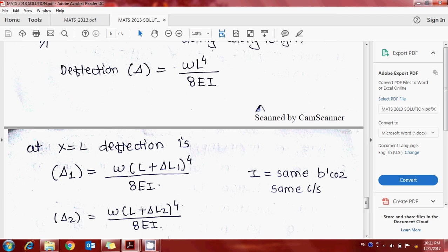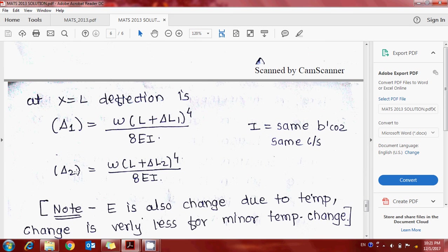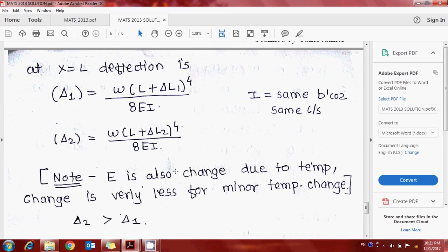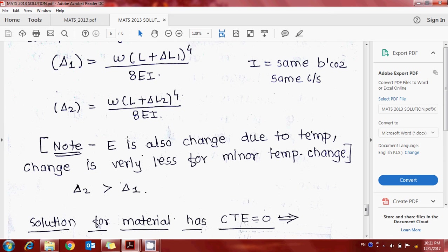For the deflection calculation, we consider the self-weight of the member because no other force and moment act on the member. The deflection formula for this is wL^4 divided by 8EI - a standard formula. But here, due to increasing temperature, length also changes, so we have to consider the changed length.